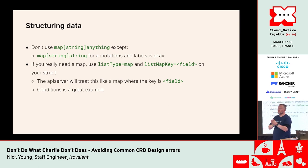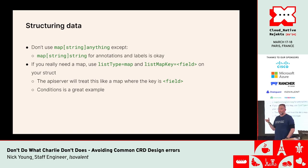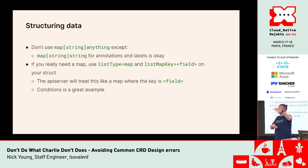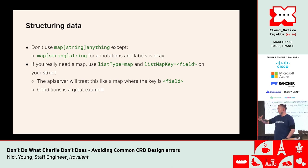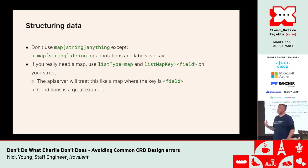The way to do maps in Kubernetes is to use list type equals map and list map key equals field. You have a list of objects where one field is the map key. Conditions are a great example. If you push a new element onto that list with the same key as an existing entry, the new one overwrites the old because the API server treats it as a map stored as a list. This lets you implement maps without violating the field-name invariant.